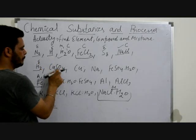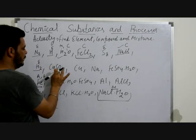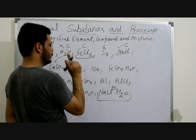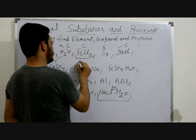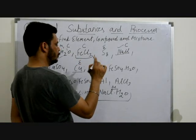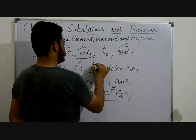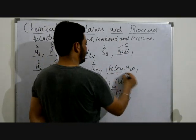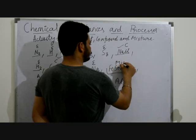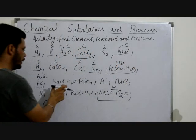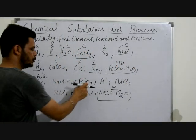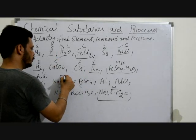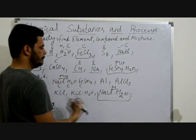CuSO4 — copper, sulphur and oxygen are present, different atoms in fixed ratio, so it is a compound. Cu alone is only one kind of atom, so it is an element. FeSO4 and H2O are two compounds mixed together, so that combination is a mixture. NaCl, H2O and FeCO3 are three compounds mixed together in any proportion — that is also a mixture.